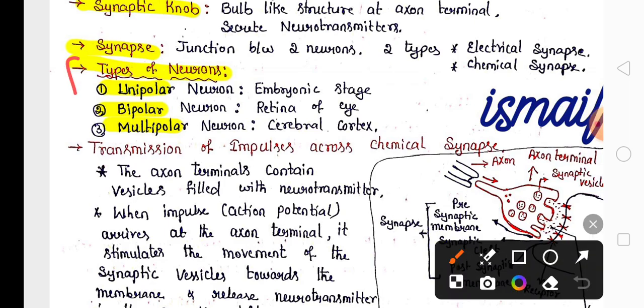For 3 marks, remember the types of neurons based on the number of dendrites and axons. Unipolar neurons are found in the embryonic stage. Bipolar neurons are found in the retina of the eye. Multipolar neurons are found in the cerebral cortex.